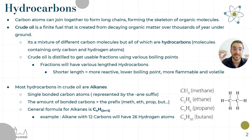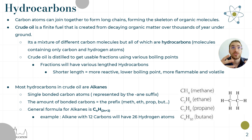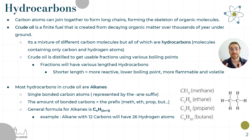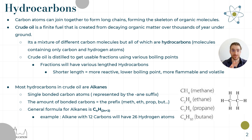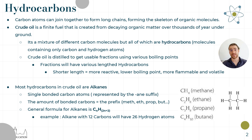We break down those long chains of hydrocarbons into shorter, more reactive chains. We then process these reactive chains to get petrol, diesel, kerosene, and paraffin, and we use the longer chains for things like road work and plastics. It's important to know: the longer the hydrocarbon chain, the less reactive it is; the shorter it is, the more reactive it is.